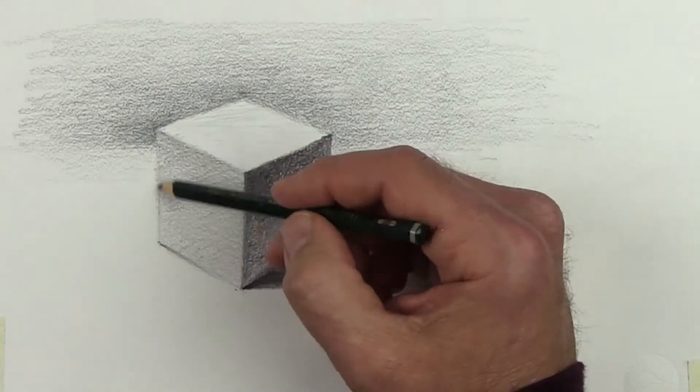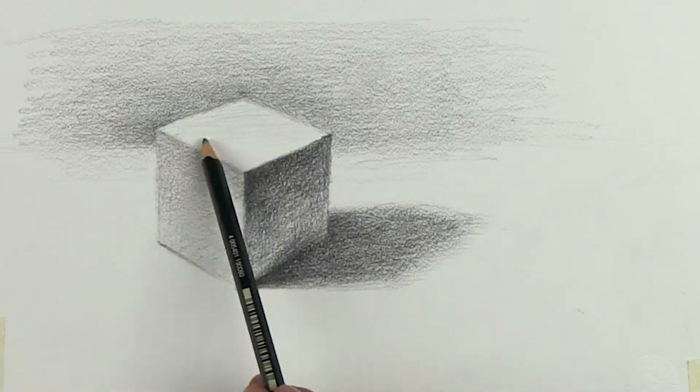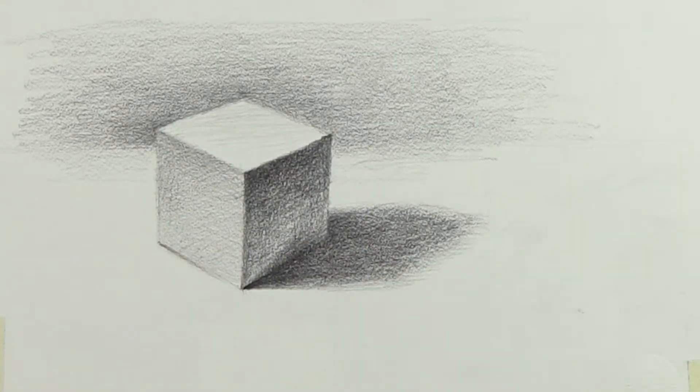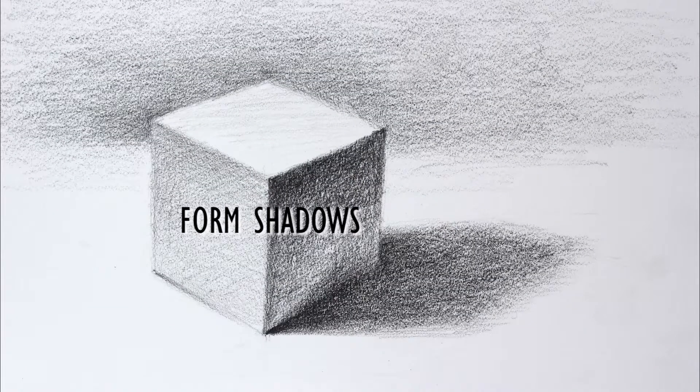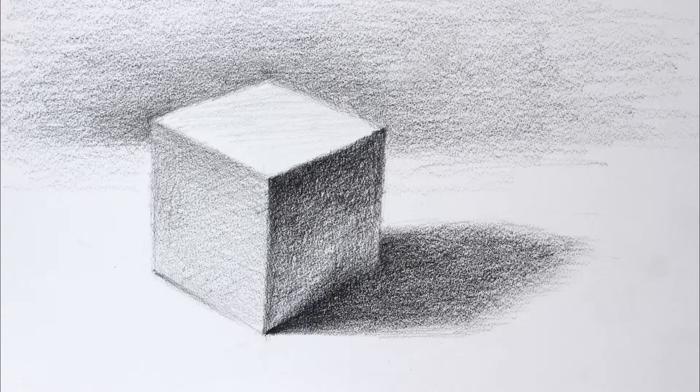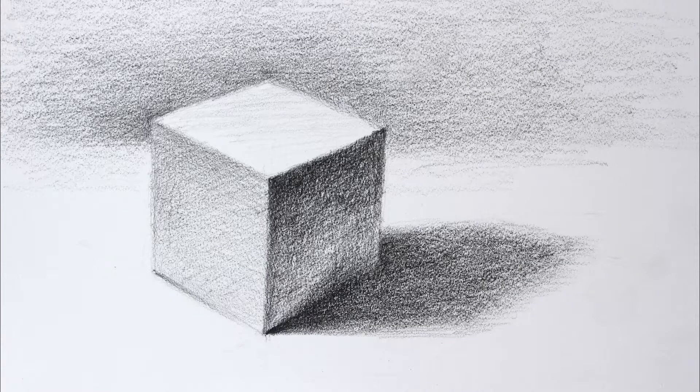Now let's look at some basic value structures that are caused by light. In this drawing of a cube we can see areas of light and areas of shadow. Shadows on the actual object or form are called form shadows. Then we have the cast shadow. This is the shadow that is cast or thrown upon another surface. In this case it's cast onto the tabletop the cube is sitting on, but it could be cast onto another object that's close by.